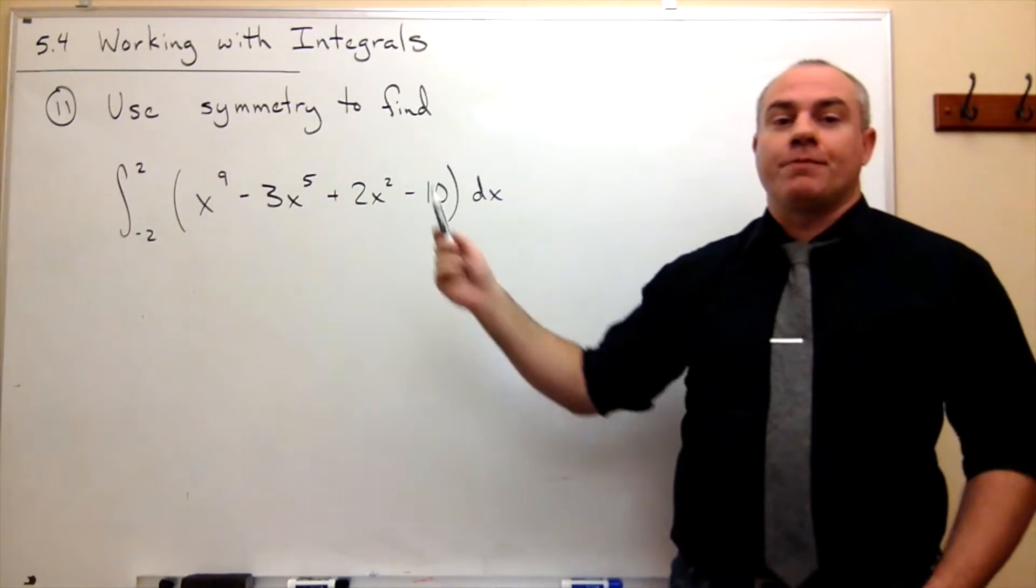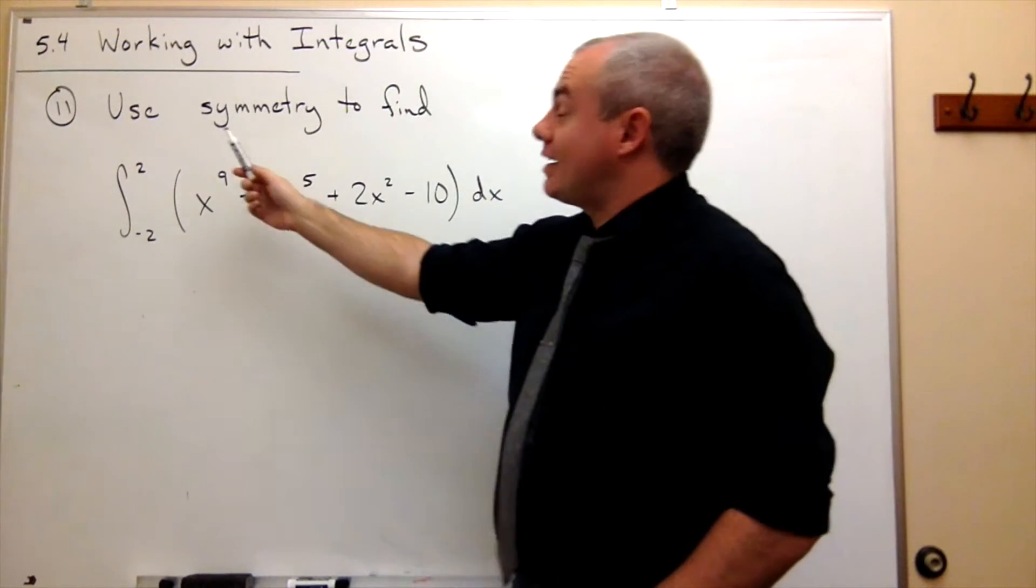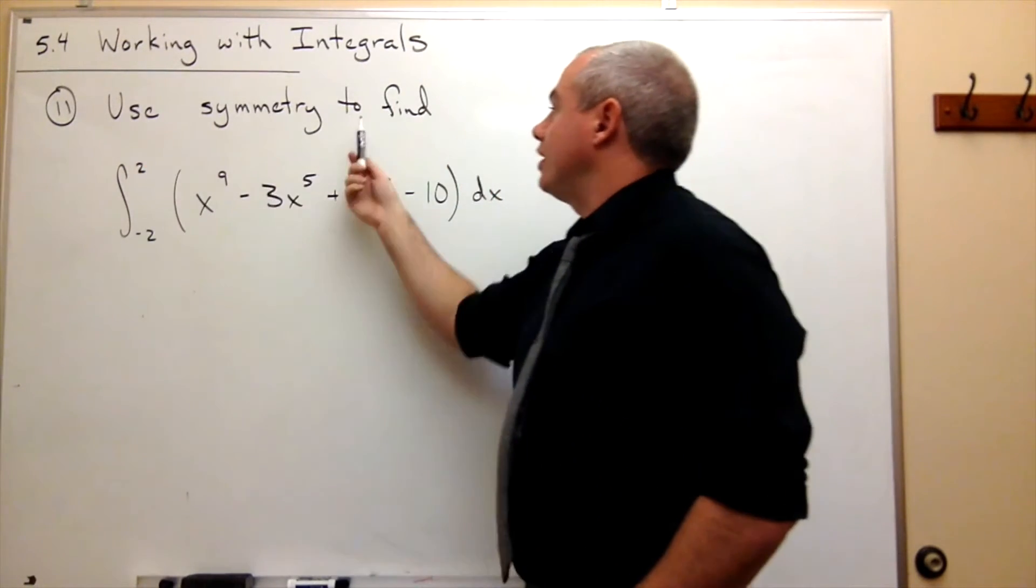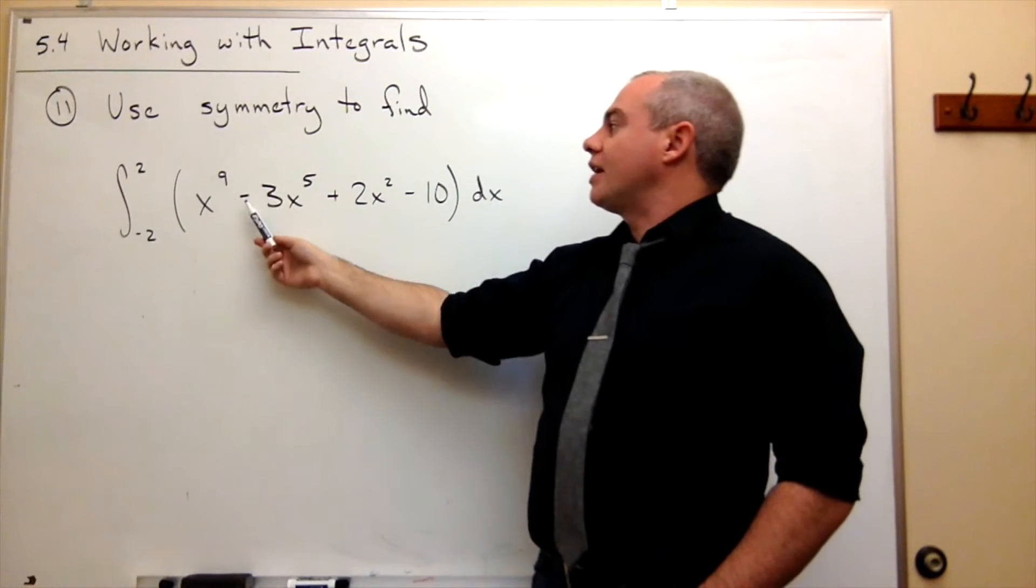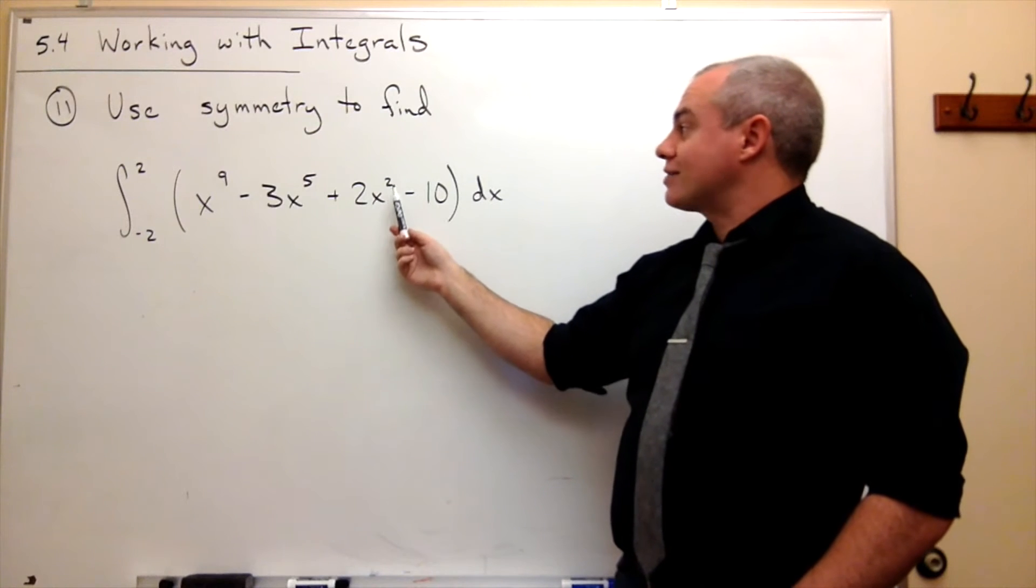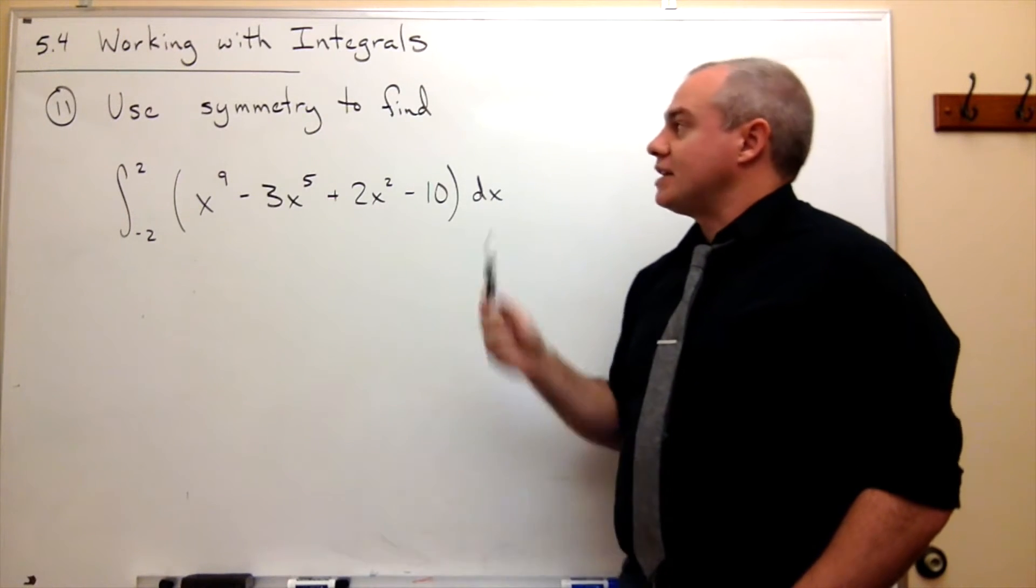We'll start with problem number 11, which asks us to use symmetry to find the integral from negative 2 to 2 of x to the ninth minus 3x to the fifth plus 2x squared minus 10 dx.